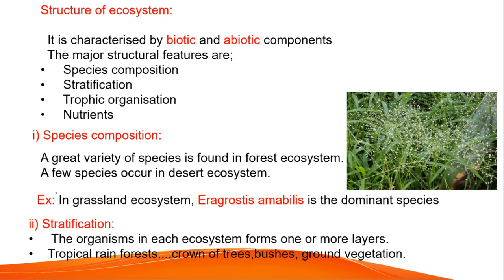First, coming to species composition. A number of variety of species are found in a forest ecosystem — animals, birds, insects and more. But in a desert ecosystem, only a few species of animals can be seen. For example, in a grassland ecosystem, Aragorostris amabilis is the dominant species, commonly seen in this type of ecosystem.